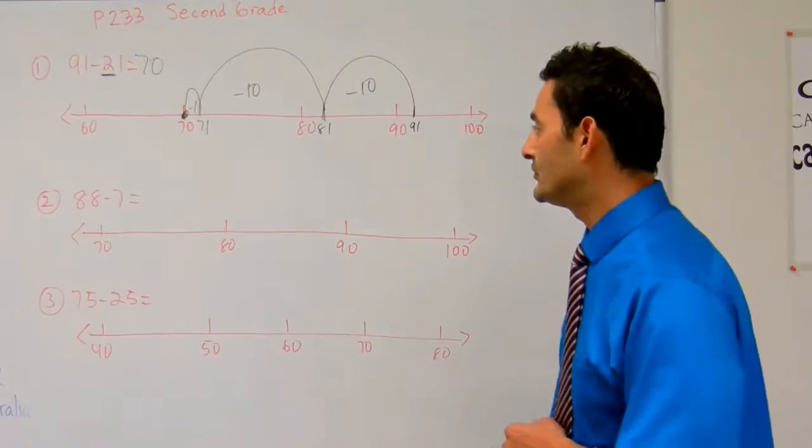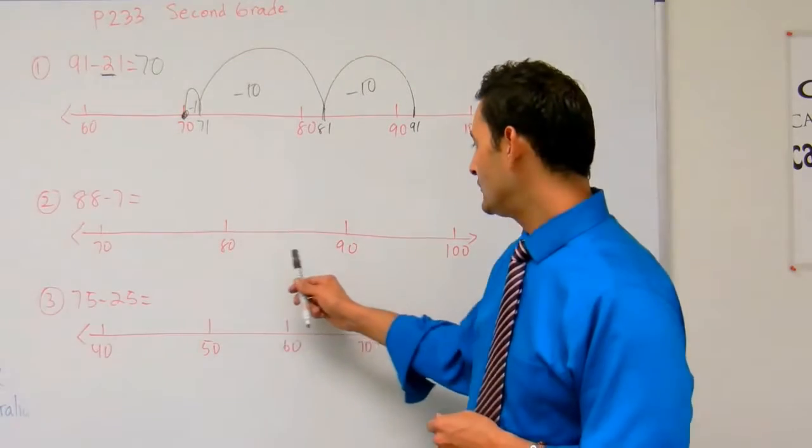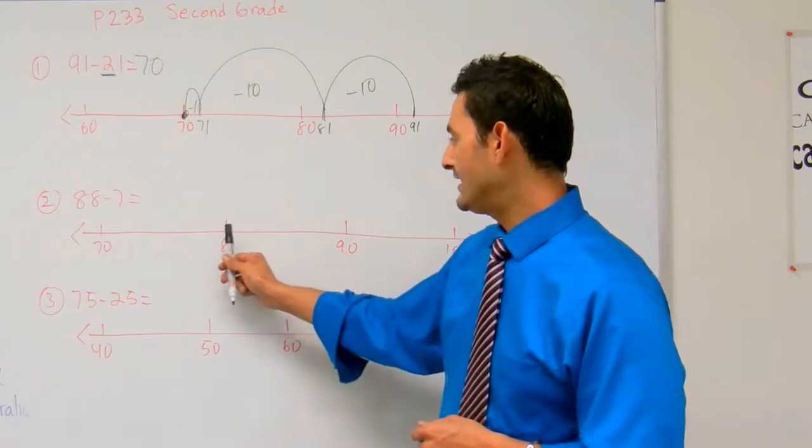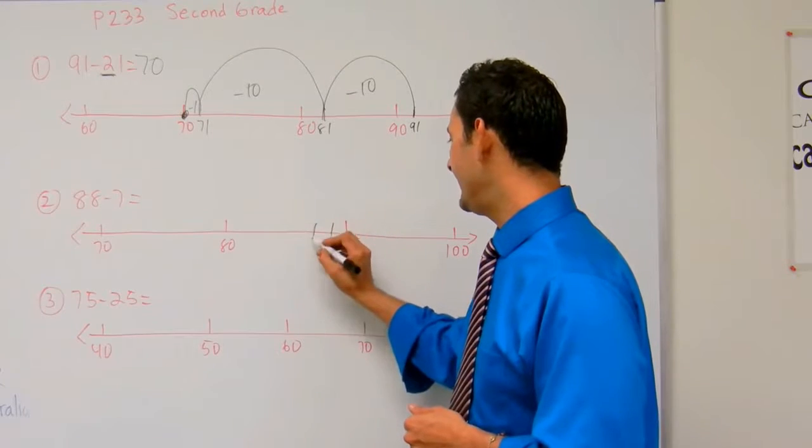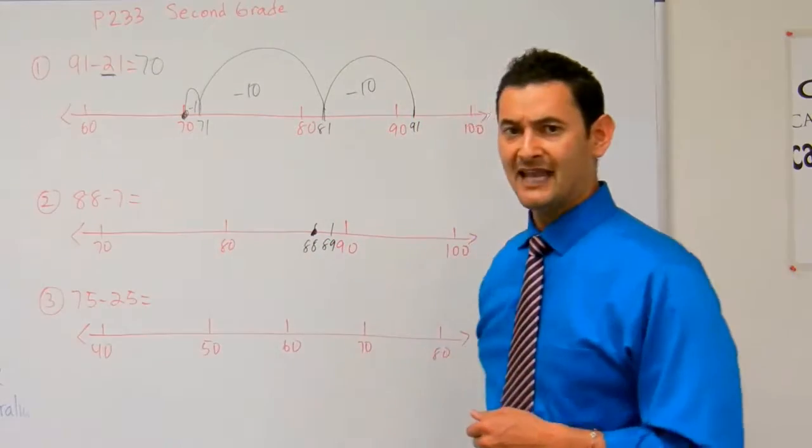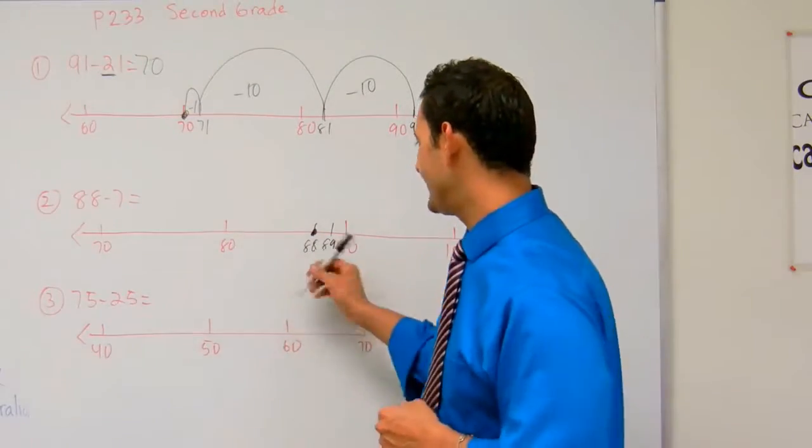Now let's look at number 2. We have 88 minus 7. I'm going to start at 90 because 88 is close to 90, and I'm doing 7, so I'll just go back 2 more. 90, 89, 88 is right there. I have a 7, not quite a 10, just 7. So I'm going to go back 7 spaces.